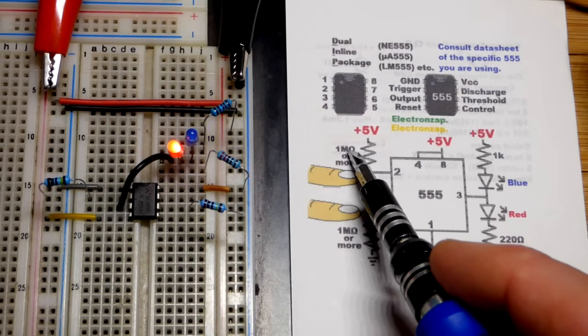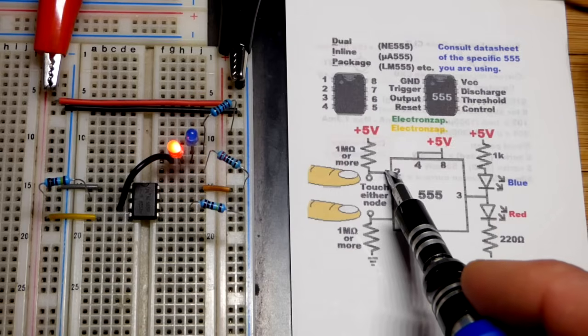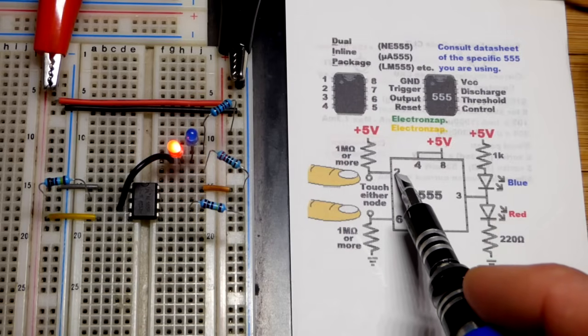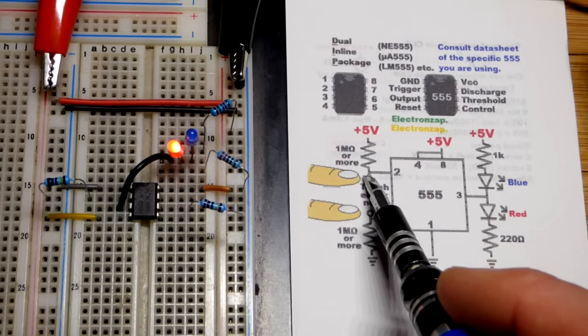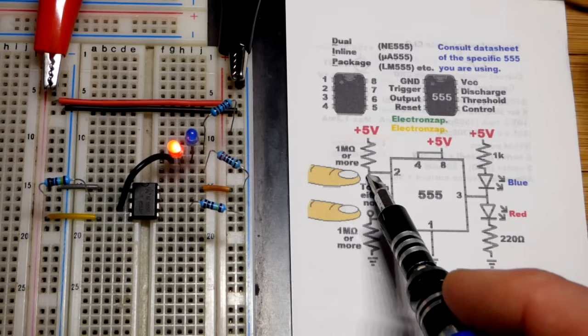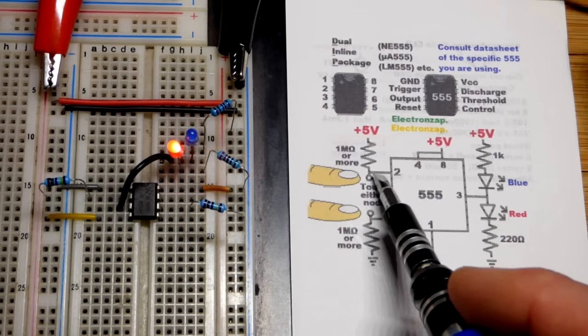And you can see when I touch the metal part that goes to the trigger pin, my body was able to get the voltage to lower, because it's going up or down rapidly, about 60 times a second.